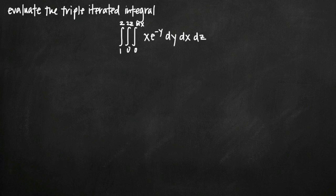Today we're going to be talking about how to evaluate a triple iterated integral. In this particular problem we're going to be taking the triple integral of the function x e to the negative y. When we're taking a triple integral we're actually going to integrate three separate times. Each time we integrate we're going to integrate with respect to one variable — x, y, and z. That's why it's called an iterated integral.